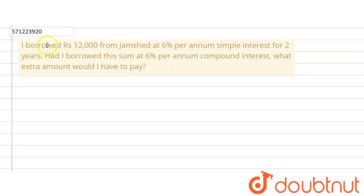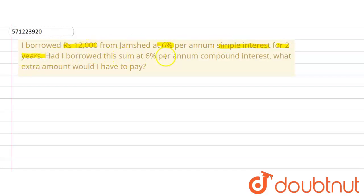The given question says that I borrowed rupees 12,000 from Jamshed at 6% per annum simple interest for two years. Had I borrowed this sum at 6% per annum compound interest, what extra amount would I have to pay?